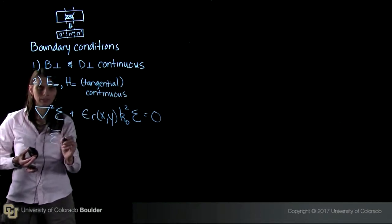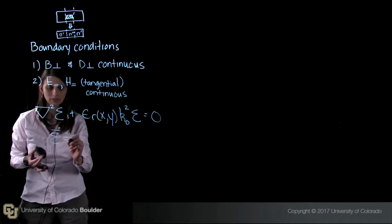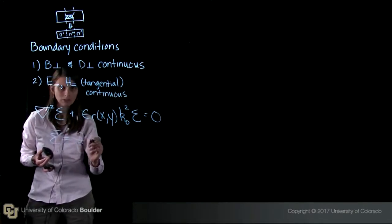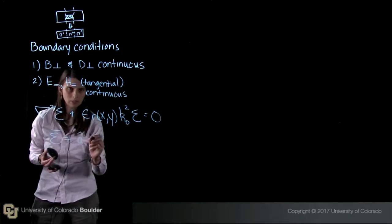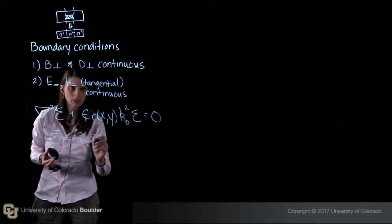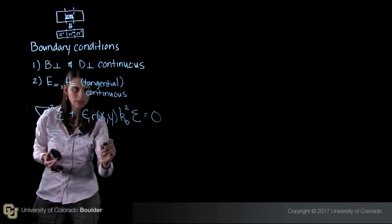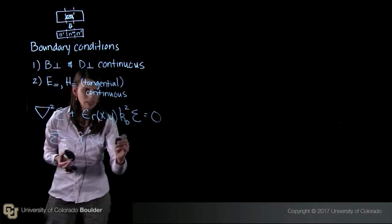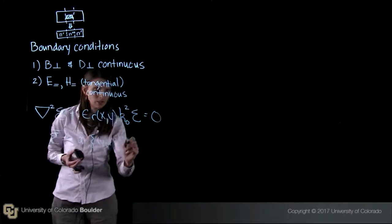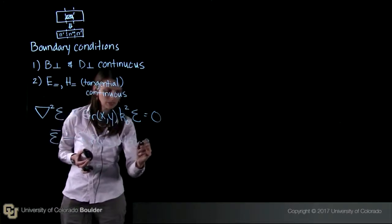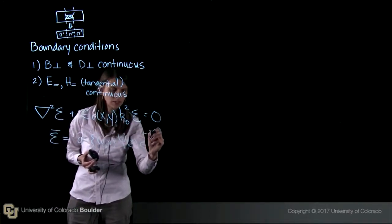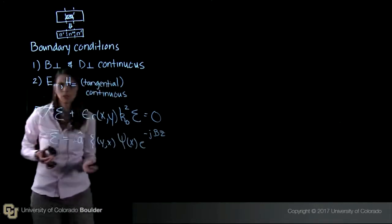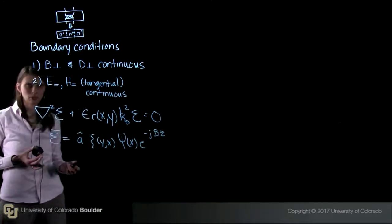The solutions to the wave equation are of the form, and here I'm solving for the electric field: e equals a hat, so that's a direction, and then here we have a squiggle of y and then semicolon x and then psi of x e to the minus j beta z.